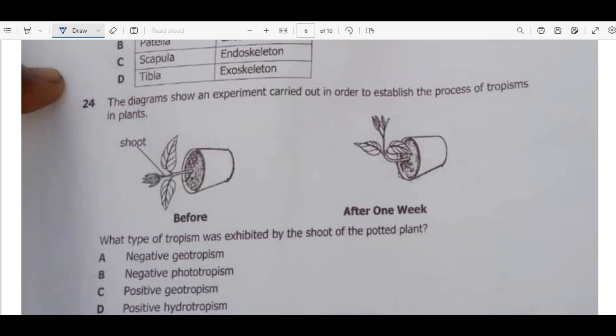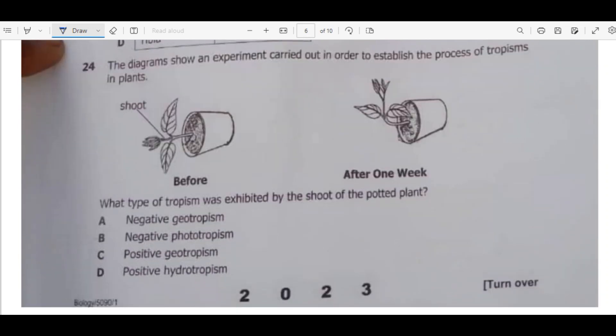We have question 24. The diagram shows an experiment carried out in order to establish the process of tropism in plants. Tropism is just the response of plants towards certain stimuli. We have the setup before, so before the plant was laid horizontal, after one week then we can see the response of the plant was towards light.